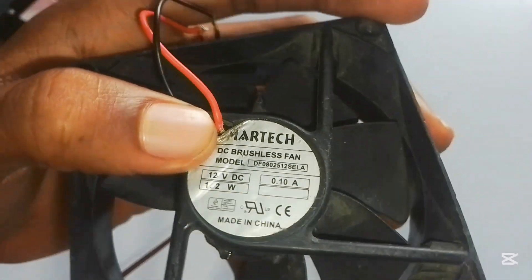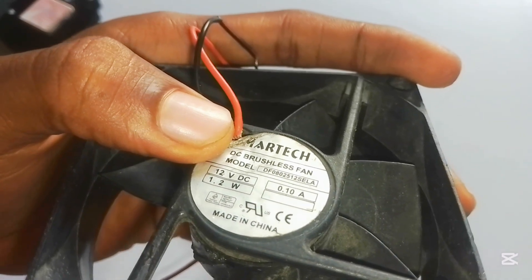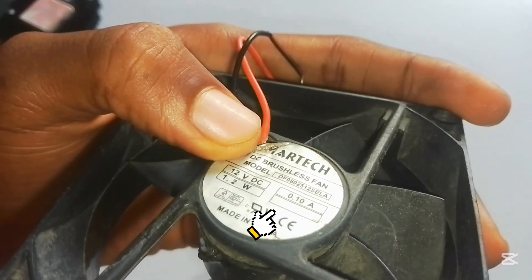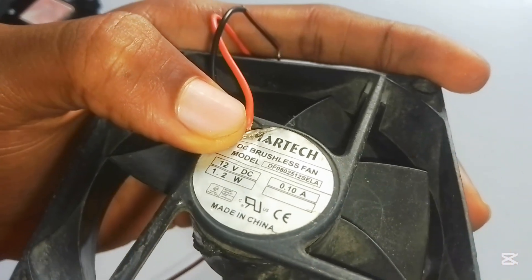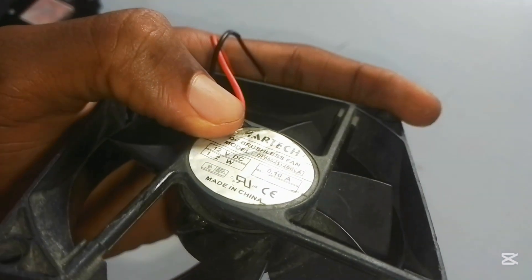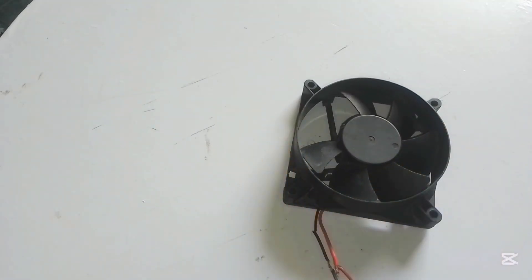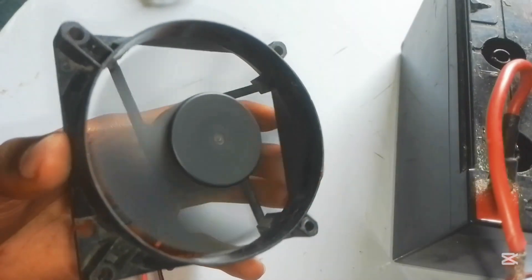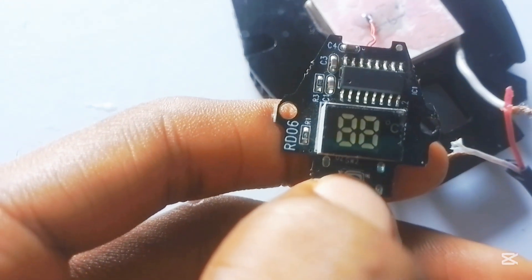To make this cooling system possible, we're going to be using the 12 volt 0.10 ampere cooling fan. You can salvage these cooling fans from some electronic equipment such as stabilizers and DVDs or different electronic stuff.